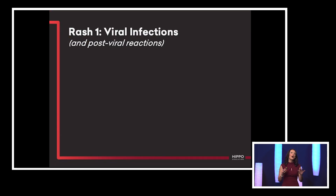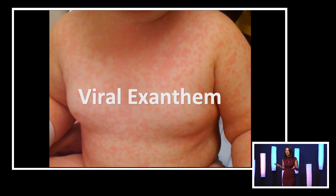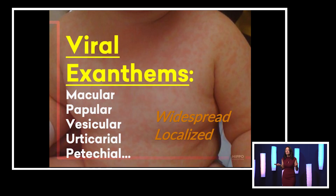The first and most common rash that we'll see in the ED is the viral infection, and sometimes we'll actually see post-viral reactions as well. The classic viral exanthem is the macular papular rash — very common with classic features, but the truth is most of the time we won't know the diagnosis. Viral exanthems can present atypically: they can be macular, papular, vesicular, urticarial, or petechial, and they can be widespread or localized. That's when your history is important.